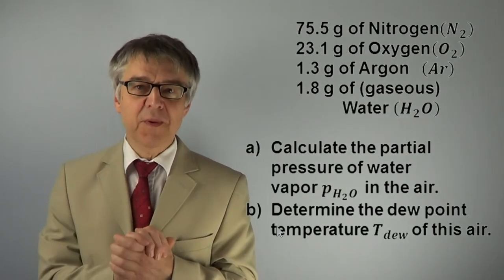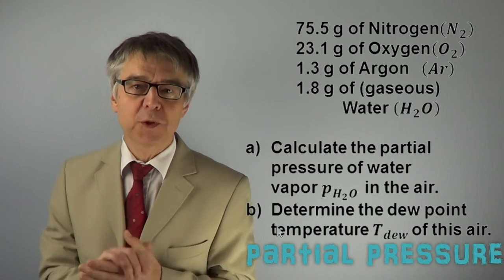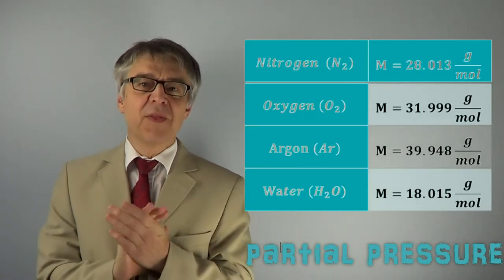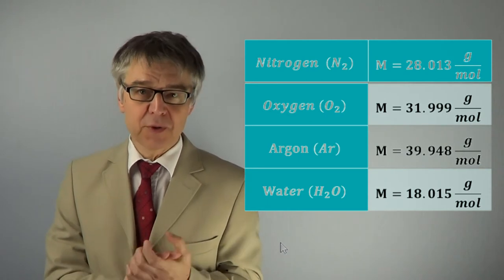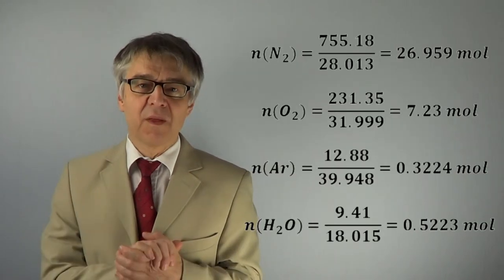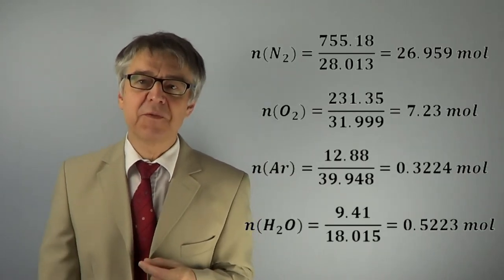We should first determine the partial pressure of water vapor in the air. For this we need the molar masses of all components and thus convert their masses to the number of moles. There are a total amount of 25 moles of gas molecules, of which about 0.5 moles of water vapor.